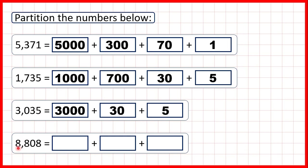Now 8,808. This 8 in our thousands stands for 8,000. We have an 8 in our hundreds, so that's 800. We have a 0 in our tens, so we don't need to partition that. And then we have an 8 in our ones, which just stands for 8.